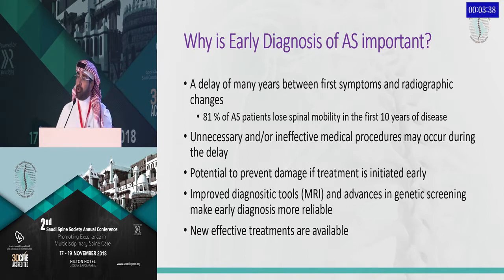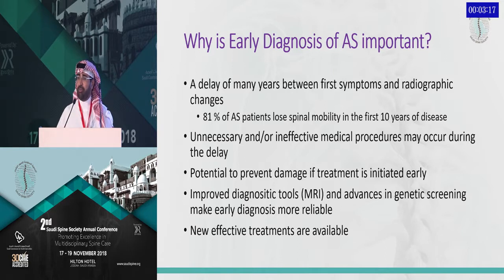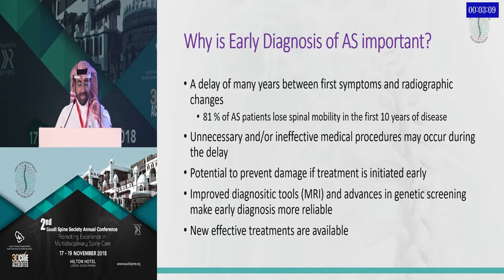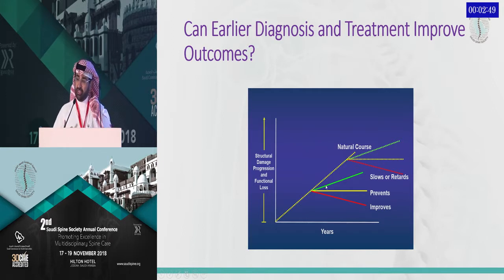Why is early diagnosis of ankylosing spondylitis important? We know there is a delay, and 81% of AS patients will lose spinal mobility within the first 10 years of disease. Unnecessary or ineffective medical procedures may occur during this delay period. There is potential to prevent damage if treatment is initiated early — we now have effective treatments that can prevent radiographic damage. Improved diagnostic tools like MRI and advances in genetic screening make early diagnosis more reliable. If you catch patients earlier, you can prevent progressive spinal damage.